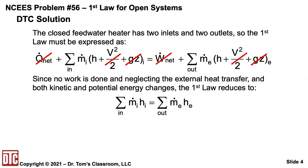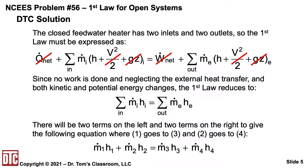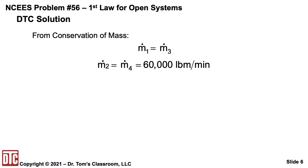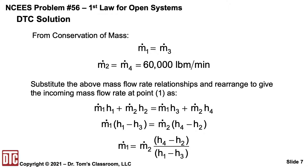We have two in and two out. As denoted in the figure, M1-dot times H1 plus M2-dot times H2 equals M3-dot times H3 plus M4-dot times H4. From conservation of mass, M1-dot equals M3-dot, and we're given that M2-dot and M4-dot are 60,000 pounds per minute. We can substitute those mass flow rate equations and rearrange — expanding terms, collecting terms in M1-dot and M2-dot — and then solve for M1-dot, giving M2-dot times the ratio of two differences in the enthalpies H1, H2, H3, and H4.